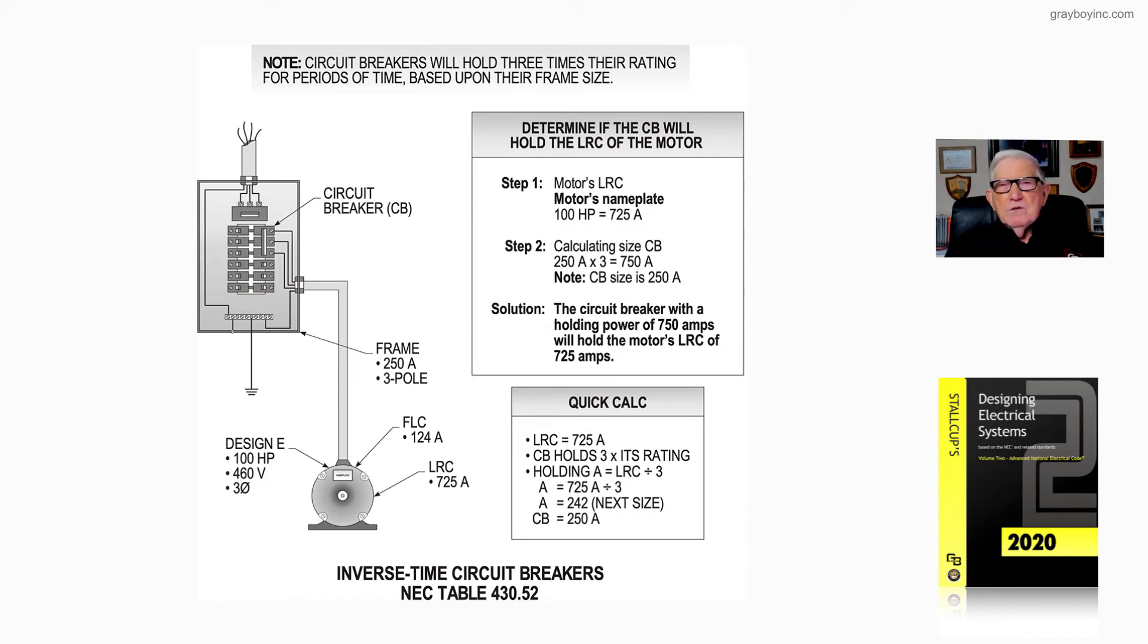You could just round that up to 250. Or say you come up with 260, then you could round down to 250 or round up to the next size in accordance with 430.52(C)(1). Remember round down size.